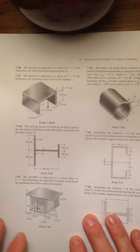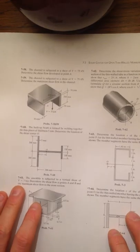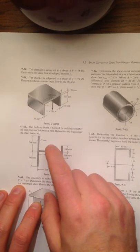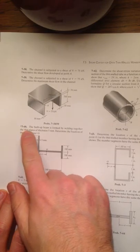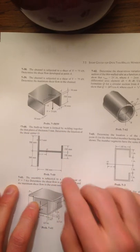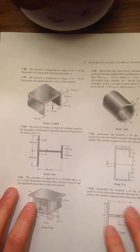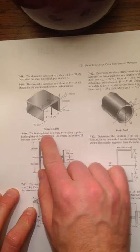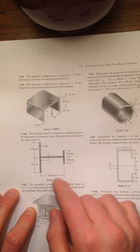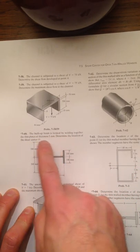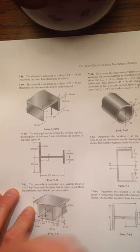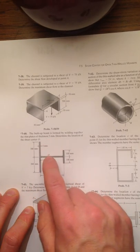Okay, so Dr. Sadegian mentioned a few examples in the final lecture, and one of them was problem 7-60 in the Hibbler 9th edition for shear centers. So let's do it together. I'm just going to read this out. The built-up beam is formed by welding together the thin plates of thickness 5 millimeters to determine the location of the shear center, right there.